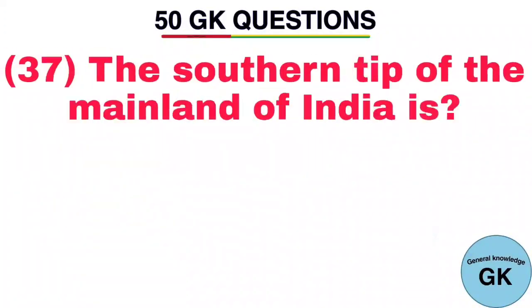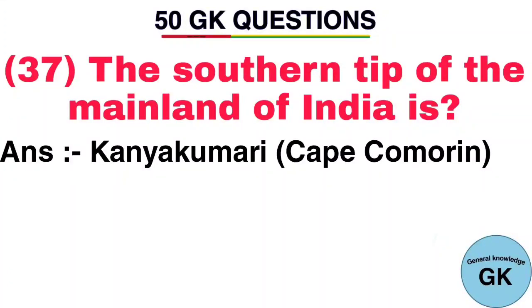Question number 37. The southern tip of the mainland of India is? Answer: Kanyakumari, also known as Cape Comorin.